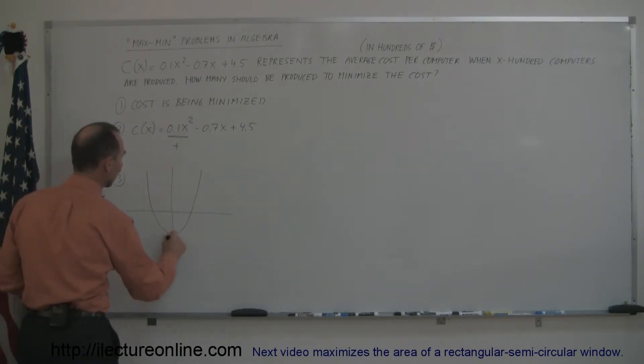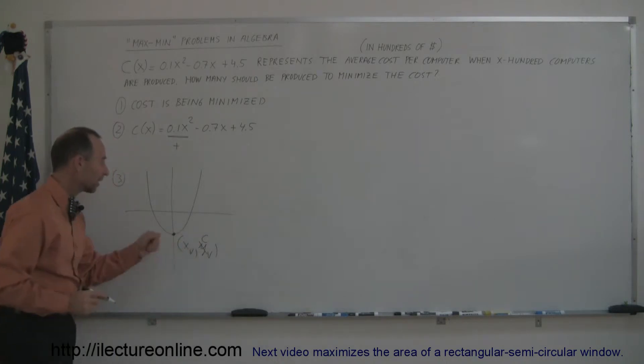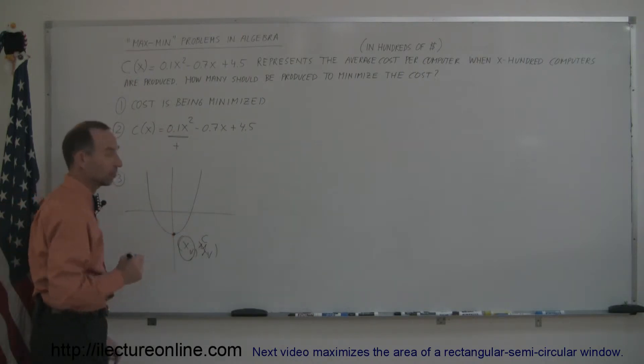Which means that there'll be a place somewhere where the minimum value of the parabola can be found, and that would be x sub v, y sub v, meaning x and y, or in this case, not y but c, are the coordinates of the vertex of the parabola. And what we're trying to find is the x-coordinate of the vertex in this case.